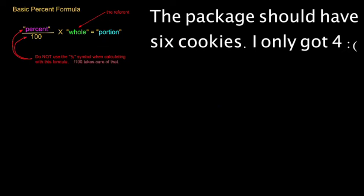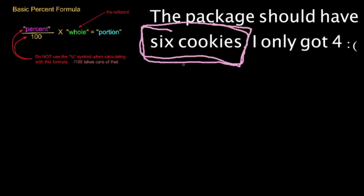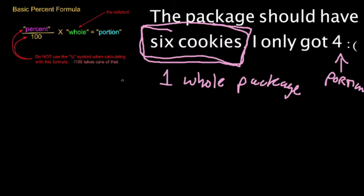I'm going to show you two very basic, very simple examples that will illustrate why you need to be careful. The package should have six cookies. The package should have six cookies is my reference point. This is what should be. This represents one whole package. What percent of a package did I actually get? This is my portion. So we're looking at, if I wanted to solve for a percent in this situation.